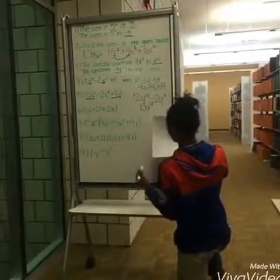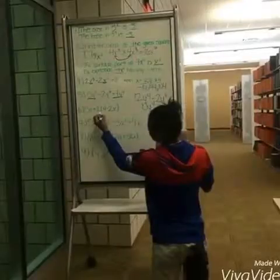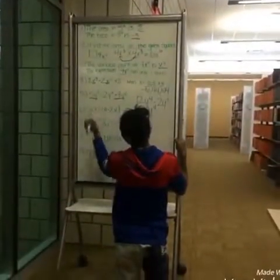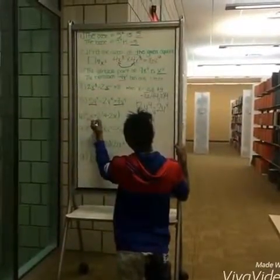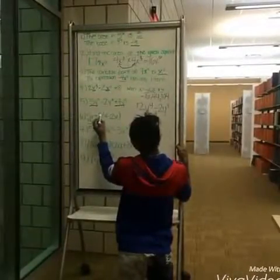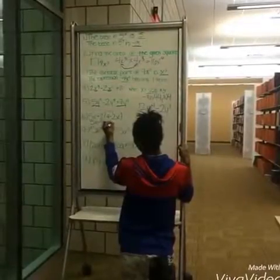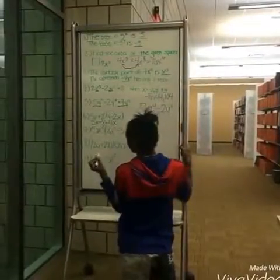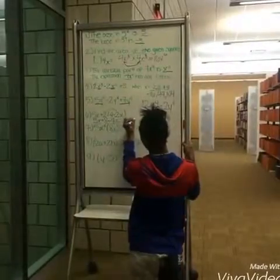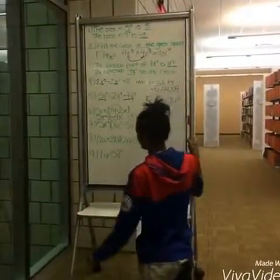For number six, you multiply 2 plus 2 times 4, which gives you 8, minus 2 times 2x, which gives you 4x. Then when you combine like terms, you'll get x plus 8, and that will be your answer for number six.